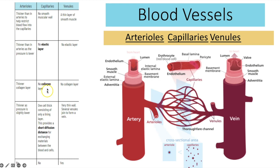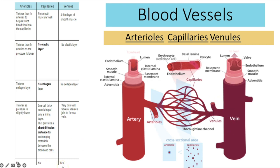The capillaries have no smooth muscle, no elastic tissue, no collagen, and no valves. They're made up of just one single layer of cells called the endothelium, only one cell thick, which provides a very short diffusion distance. The venules have a thin layer of smooth muscle but no elastic layer or collagen. They're very thin-walled, and several venules join to form a vein. Venules do have valves to help prevent backflow, as the pressure is lower.